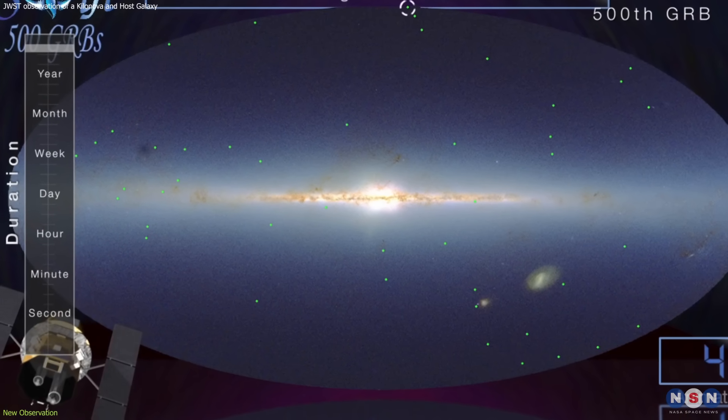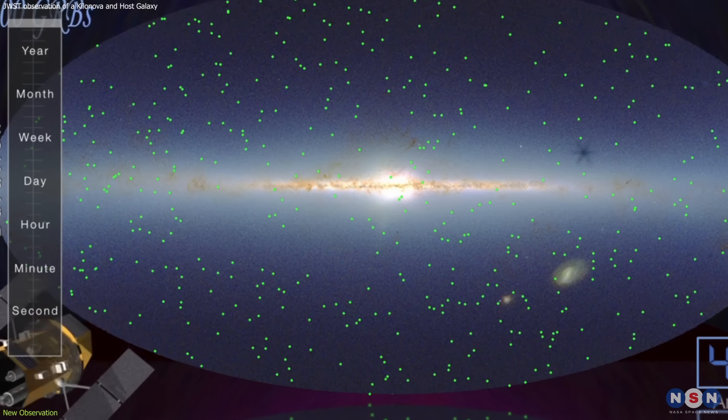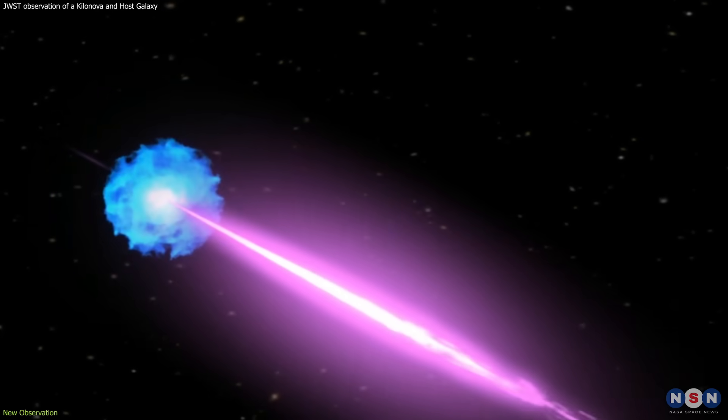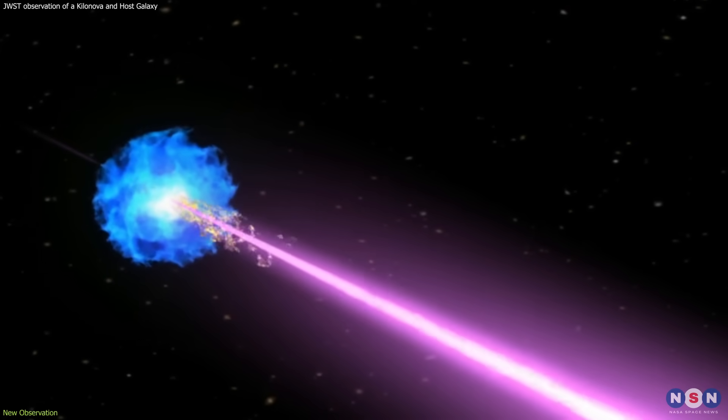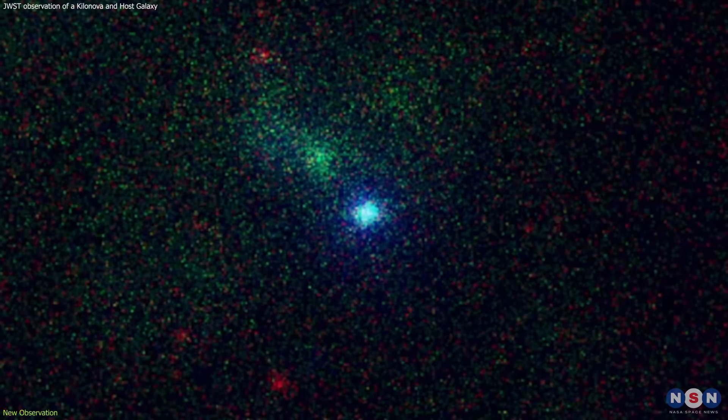Swift is a NASA mission that monitors the sky for gamma ray bursts, which are brief flashes of gamma rays that can last from a few milliseconds to several minutes. Gamma ray bursts are among the most powerful and mysterious events in the universe.